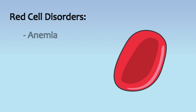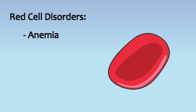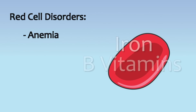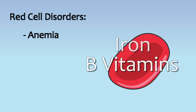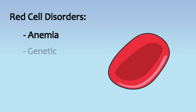Disorders that affect red blood cells are typically classified as anemias and range from nutrient deficiencies, such as a lack of iron or B vitamins, both vital for proper hemoglobin and red cell function. There are also a range of genetic disorders that may cause red cells to be defective when they form.